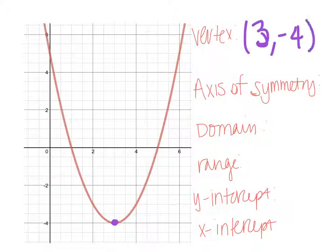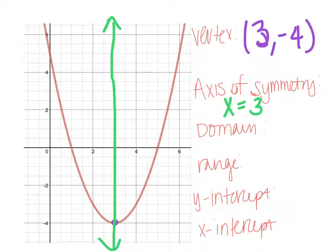My axis of symmetry is the line that goes through the vertex that splits the graph in half, so that the two sides are 100% identical to each other. And this line is a vertical line, so its equation, its slope is undefined. Its equation is always x equals some number. In this case, it's going to be x equals 3, because that's where it crosses the x-axis.